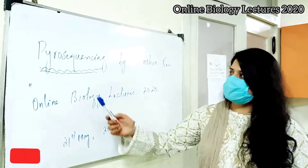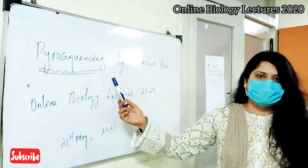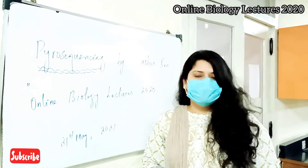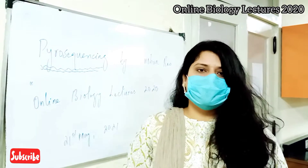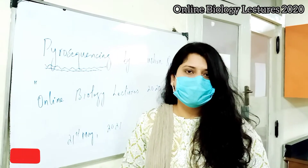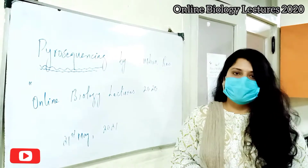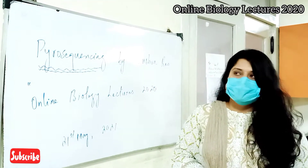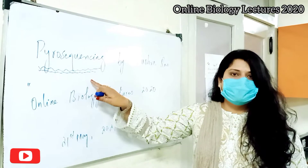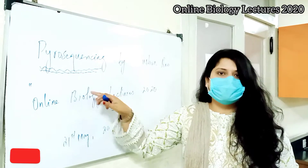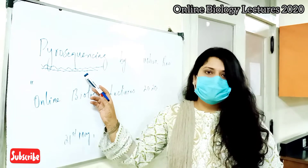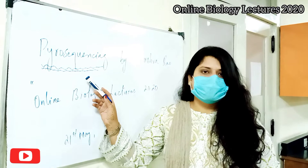The topic we are going to discuss today is pyrosequencing. There are two basic types of sequencing: the conventional Sanger sequencing and the advanced NGS. Pyrosequencing falls under NGS, that is next generation sequencing, and is also known as high throughput sequencing.